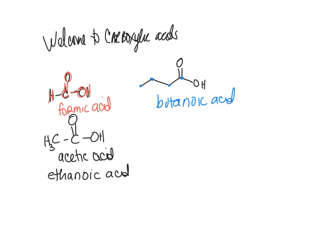In butanoic acid, the carboxylic acid carbon is always number one — it's the highest priority. You can also have aromatic acids. Benzoic acid is an important one to know.